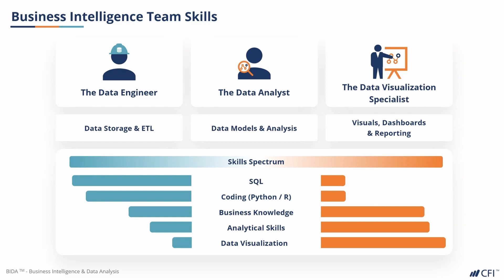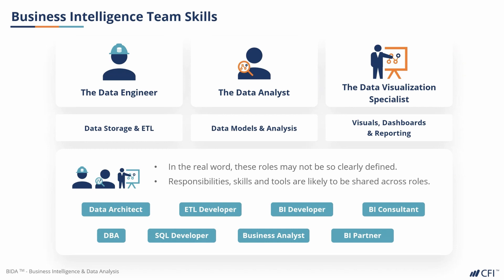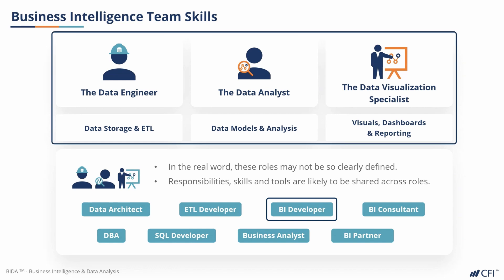In summary, in the real world, these roles may not be so clearly defined. Responsibilities, skills and tools are likely to be shared across roles. For that reason, you're likely to come across a variety of different job titles that each focus on different areas of BI, from technical roles like a data architect or SQL developer, through to the more general titles of BI developer and BI partner. The job description of a BI developer, for example, is likely to involve elements from all three of the above roles — they'll be expected to do a bit of everything. You'll just have to look closely at the specific job description to see what the role involves and what skills they require.